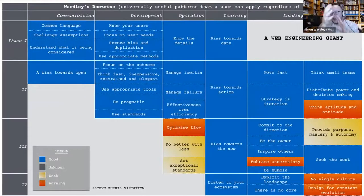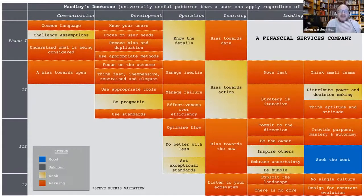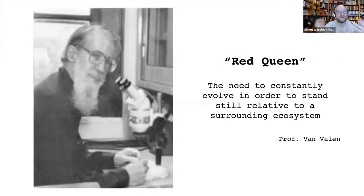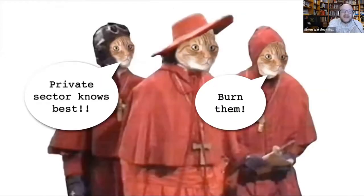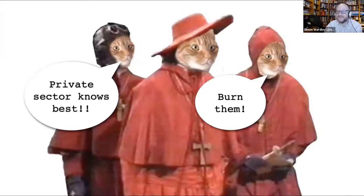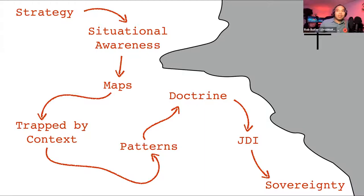The lesson people often draw — that government should learn from the private sector because the private sector knows best — doesn't hold up when you look at the state of some private sector organisations. The final topic, digital sovereignty, mixes maps, culture, and competing against other nations — a fun topic. With about 30 minutes remaining, there are also questions from the audience to get to.